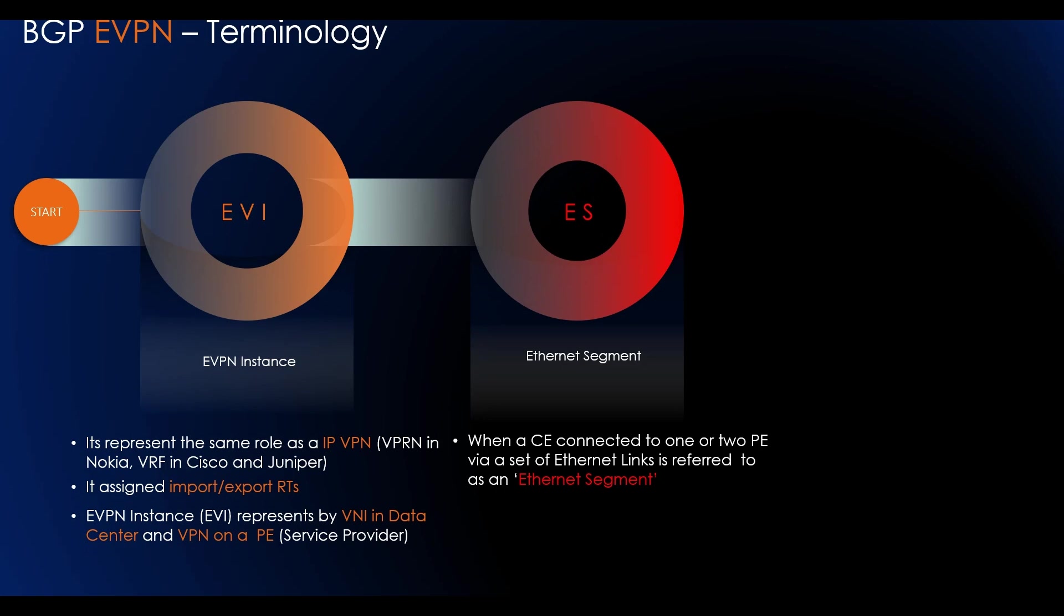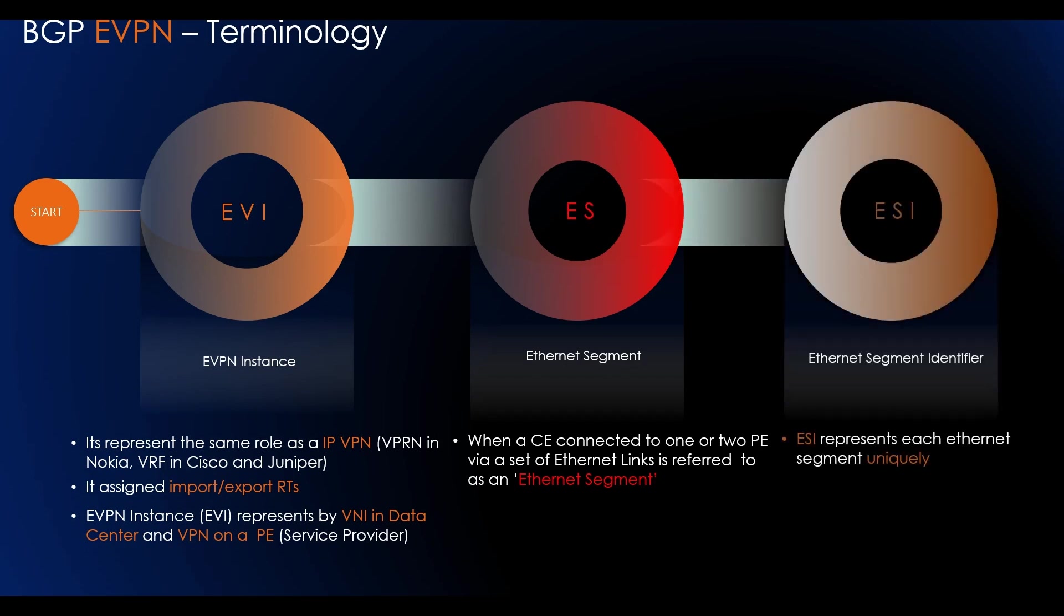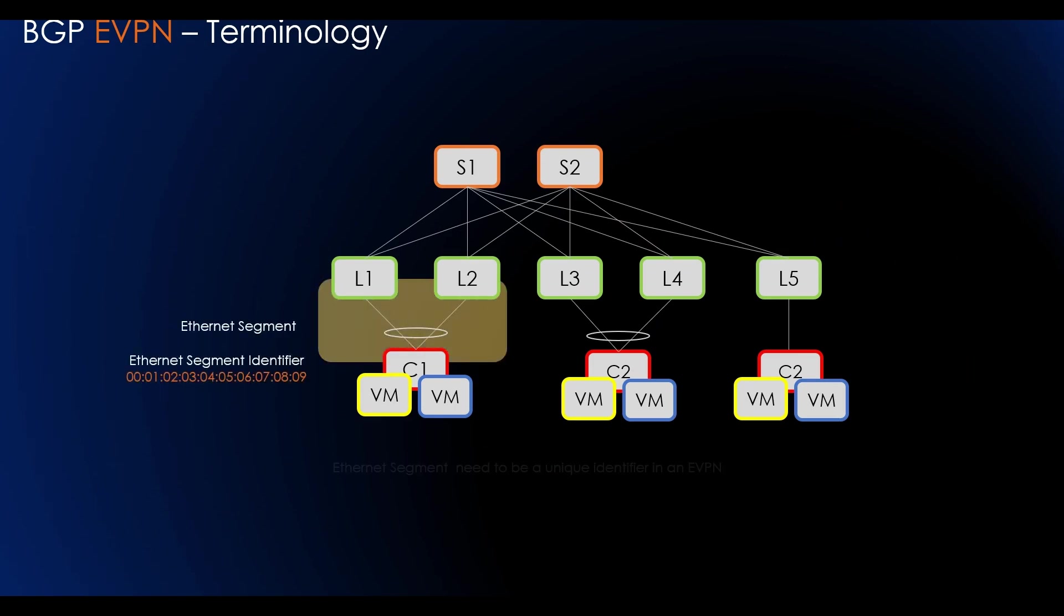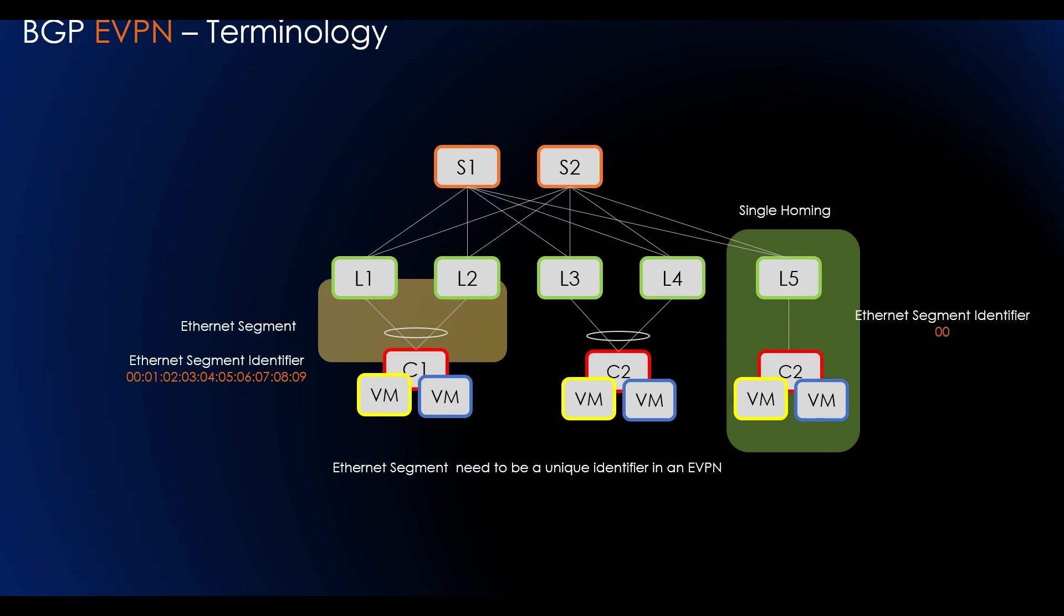When a customer site is connected to one or multiple PEs via a set of Ethernet links, then this set of Ethernet links constitutes an Ethernet segment. For multi-homed sites, each Ethernet segment is identified by a unique non-zero identifier called Ethernet Segment Identifier. An ESI is encoded as a 10-octet integer in line format with most significant octets sent first. Two ESI values are reserved: ESI 0 denotes the single-homed site, and ESI 0xFF is known as max ESI and is reserved.